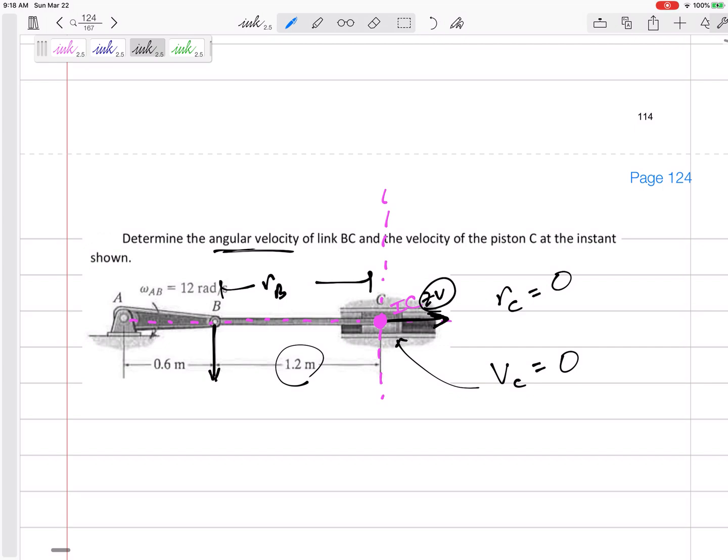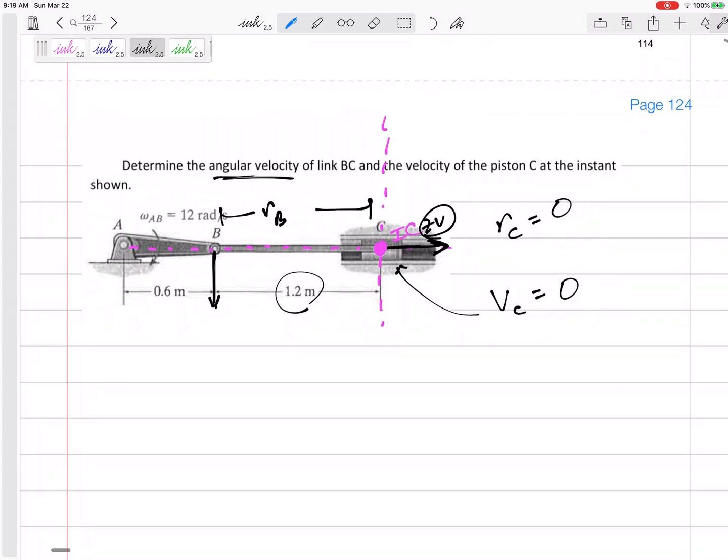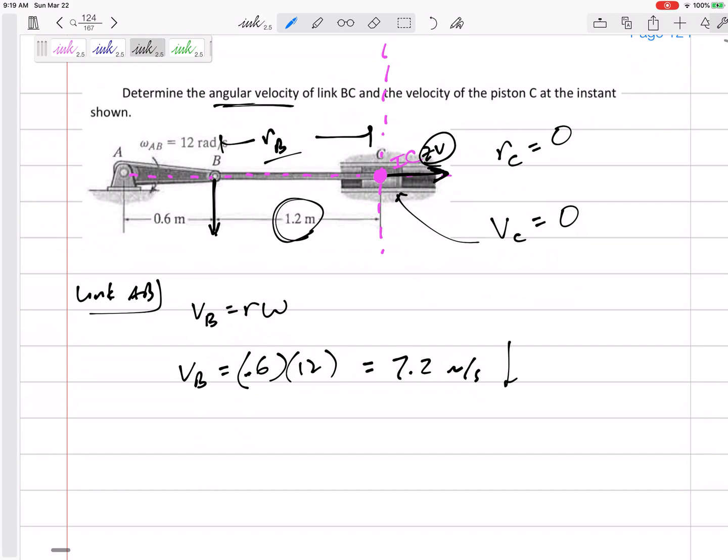So let's use the process that we've been doing now that we know where the instantaneous center is and all the distances from the instantaneous centers. All right, where am I going to start? Well, where are you giving the most information about? Over here, AB. So I'm going to start at link AB and I'm going to say V equals R omega, right? VB equals 0.6 times 12. So VB is 7.2 meters per second. It's down because I was shown that that is going clockwise. So that would visually mean B would be going down.